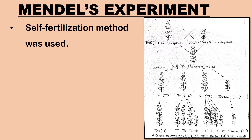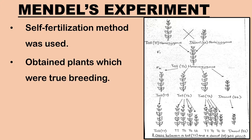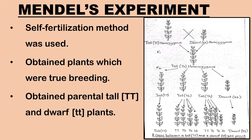Let us learn about Mendel's experiments with pea plant. Mendel adopted self-fertilization method to rear genetically pure variety of pea plants for a single character. Mendel started with pure lines and confirmed after many generations that the parents are true breeding. He obtained parental tall plant with factors TT and dwarf with tt.